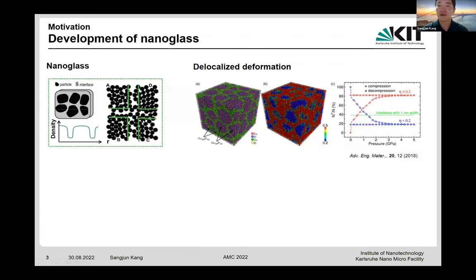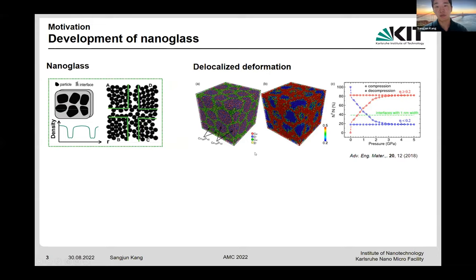Nanoglass is a new class of non-crystalline solids. They differ from metallic glass due to their microstructure, consisting of regions with a dense glass structure connected by interfaces. The structure of nanoglass is characterized by reduced density of up to about 10% compared to fully melt-quenched glasses. Simulations propose that the inherent interfaces of nanoglass can delocalize plastic strain, so nanoglass accommodates significantly high plastic density and can deform like a ductile material, making it highly interesting for mechanical applications.